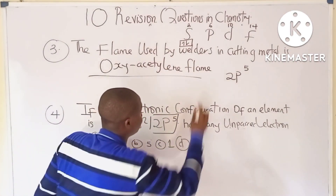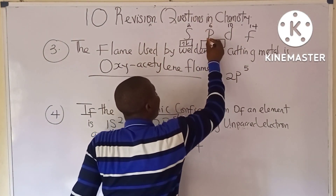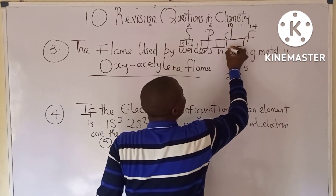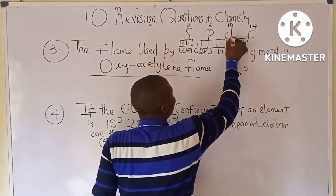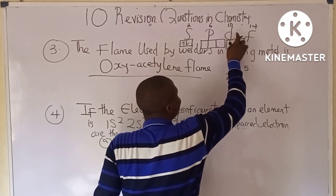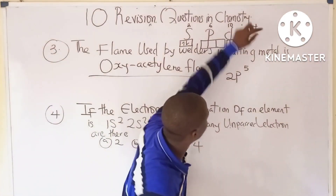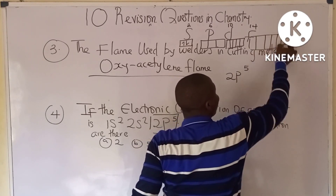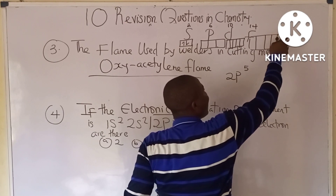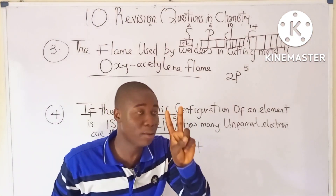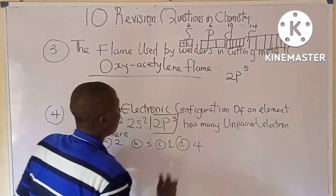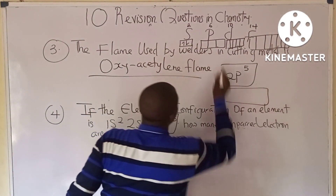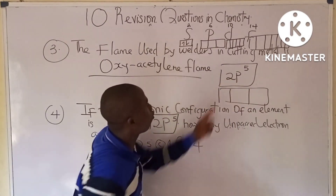For the s orbital, we draw one box (maximum 2 electrons). For the p orbital with 6 electrons, we draw three boxes. For the f orbital with 14 electrons, we draw seven boxes — two electrons per box gives 14 maximum. In this case, the element ends in the p orbital.